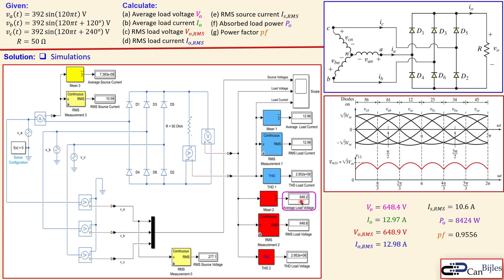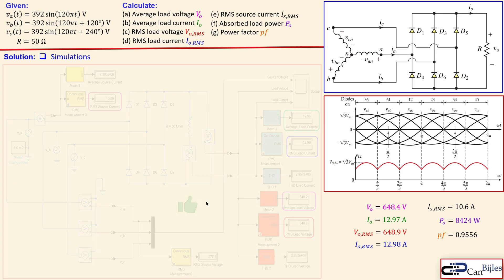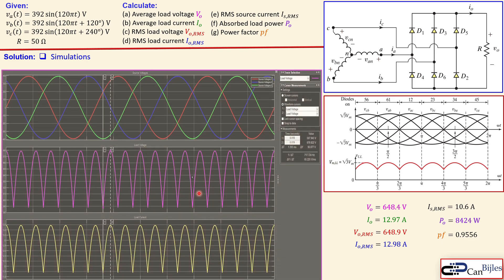Going through the results one by one: the mean average load voltage from simulation is 648.2 volts versus our calculated 648.4 — very close. The average load current is 12.96 versus calculated 12.97. The RMS load voltage is 648.8, also close to the calculated value. The RMS load current is 12.98 amps, exactly matching our calculation. The source current RMS is 10.59 amps versus our calculated 10.6 — all values check out.